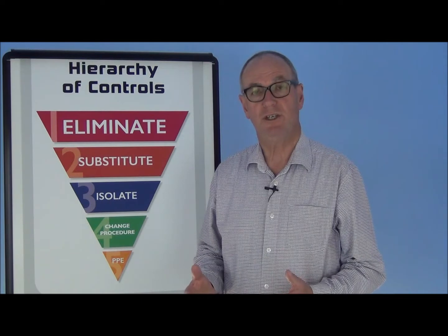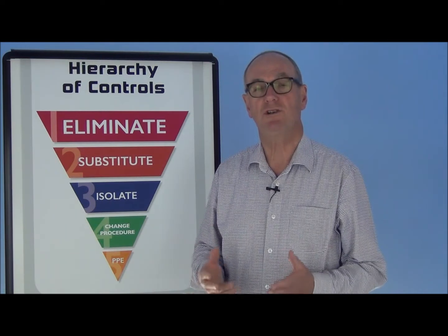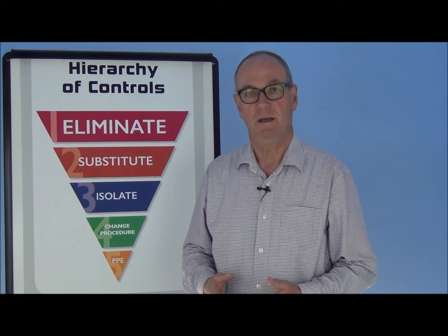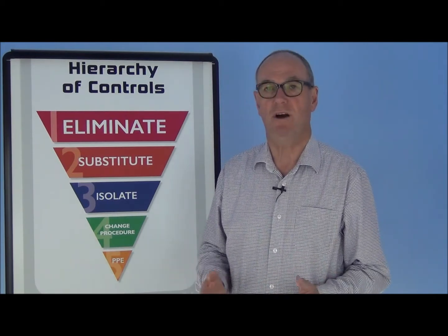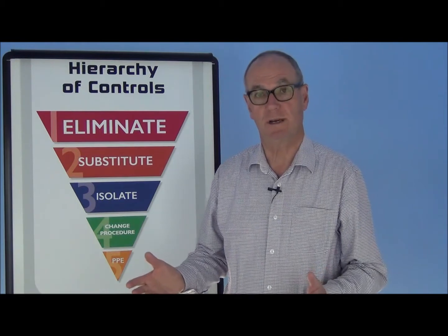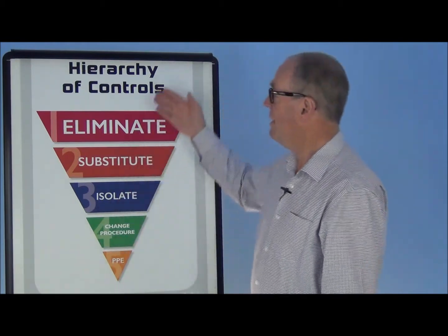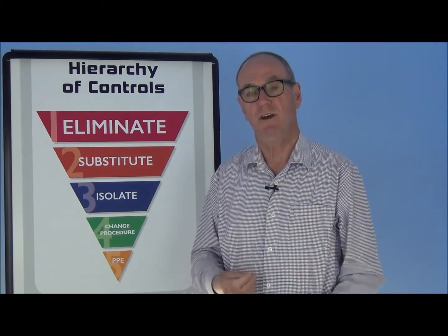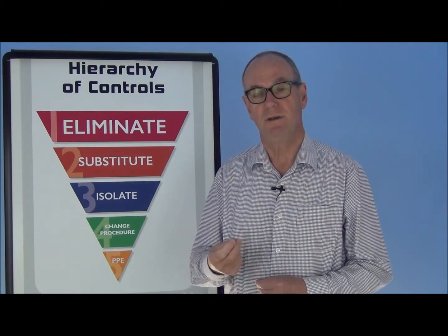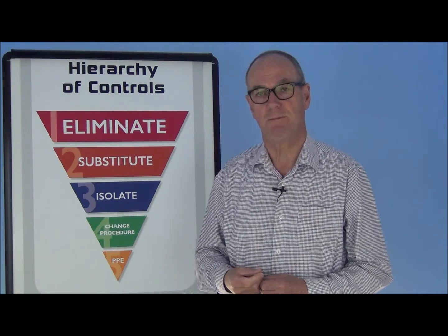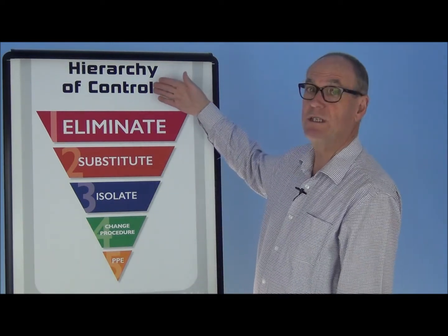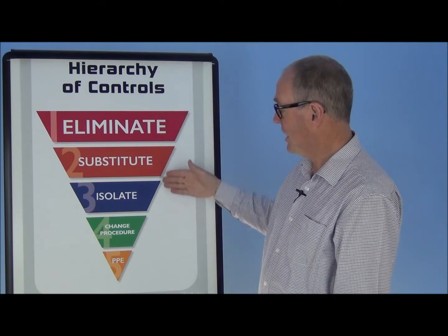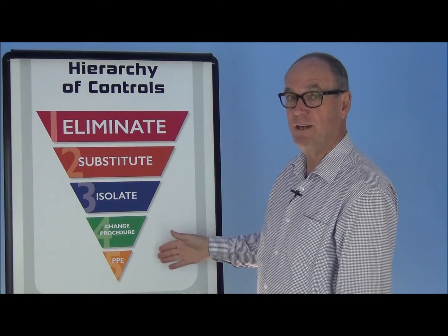There is a definite method or procedure to use when it comes to deciding what controls you will apply to manage a hazard in the workplace. What we have here is what's called a hierarchy of controls. This is an internationally recognised standard for deciding controls to manage hazards in a workplace. It's called a hierarchy because the most effective controls are at the top and as you progress down the chart we get down to the least effective controls.